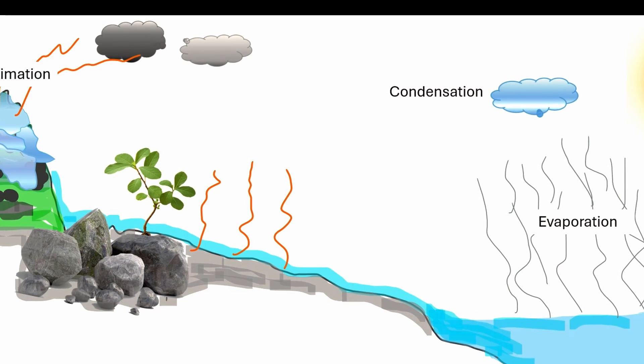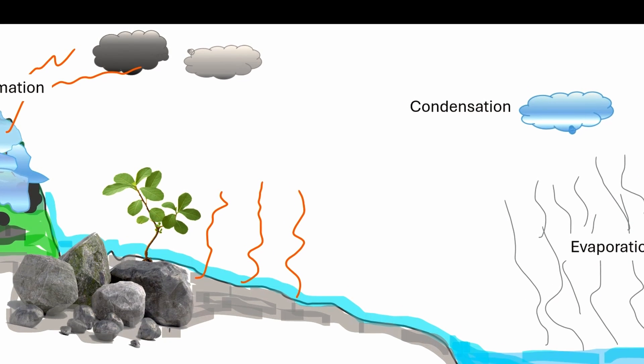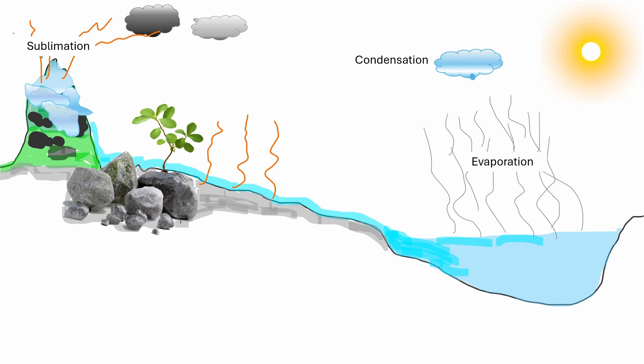A huge concentration of these droplets over a large area in the atmosphere becomes visible as clouds. Condensation near ground level is referred to as fog.